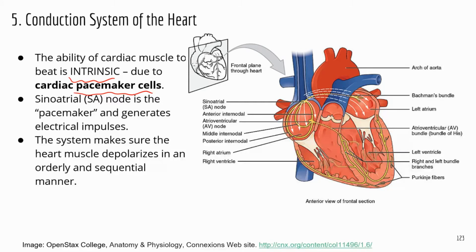Everything starts with the pacemaker cells located in the sinoatrial node, or SA node. This part is critical for the contraction of the heart because this is where the pacemaker cells are located. Pacemaker cells can generate their own electrical impulses — how cool is that? The cells in the SA node control the rhythm of the heart contraction, so any issues with the SA node are going to disrupt that contraction.